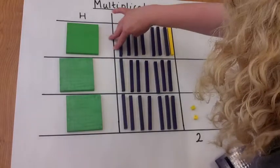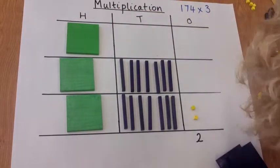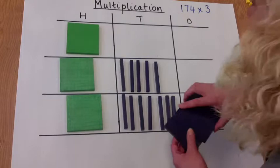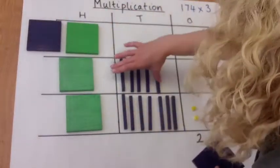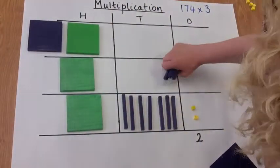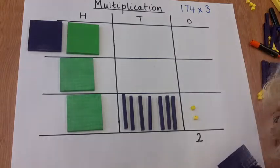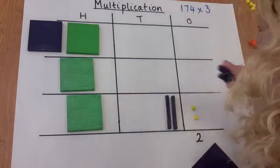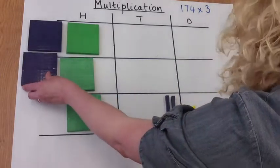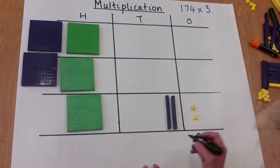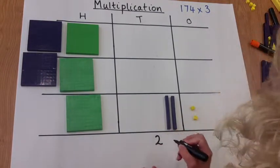So we need to regroup 20 of the tens into hundreds. And we've got two extra hundreds into the hundreds column, and we've got two tens in the tens column.